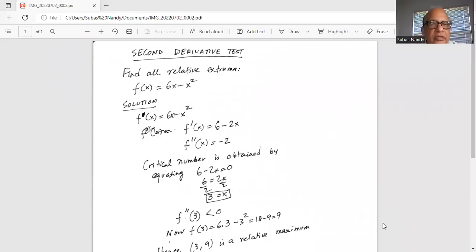Second derivative test, this is the second example. Find all relative extrema. The function is 6x minus x squared.